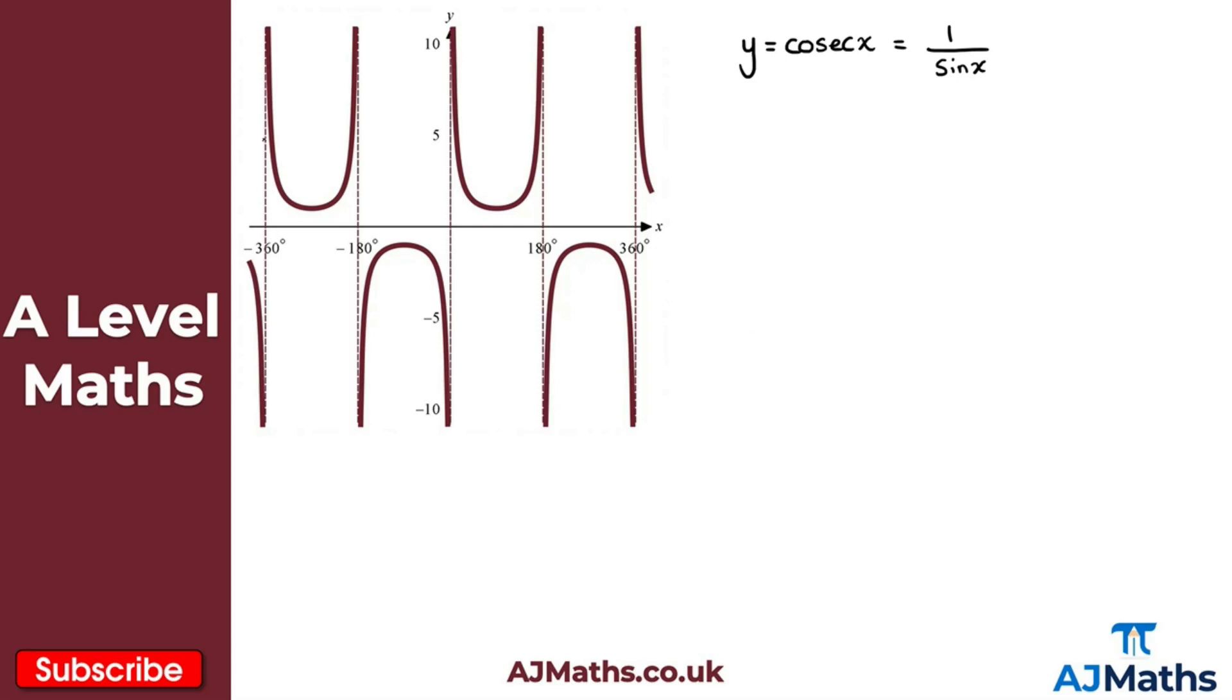We're going to have asymptotes here: x equals minus 360 degrees, minus 108 degrees, zero degrees, 108 degrees, and then finally 360 degrees.